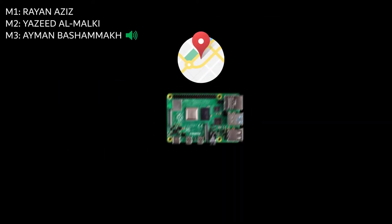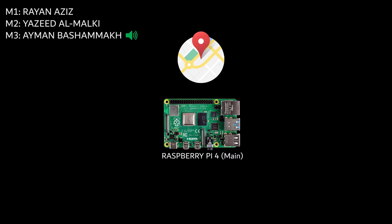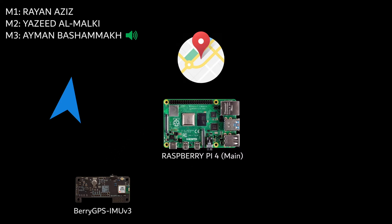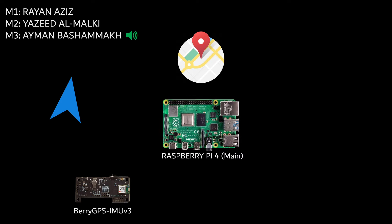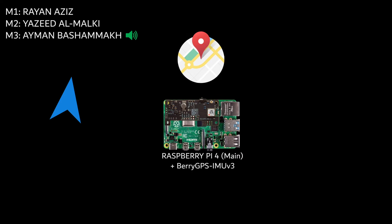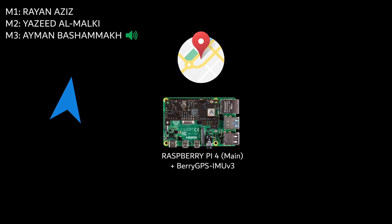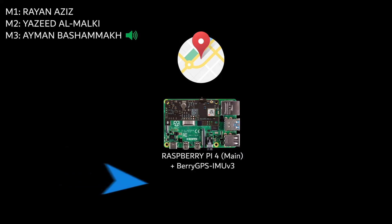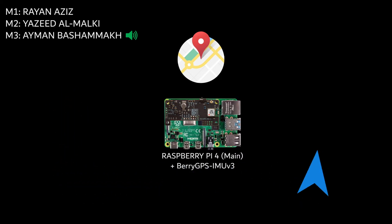Second is the navigation module, which is divided into two parts. The first part is the navigation itself, which will process IMU and GPS data to calculate the direction angle continuously based on the current car orientation and the next destination location. Then, using the calculated direction angle, the car will steer to the final destination by passing through checkpoint destinations along the way.